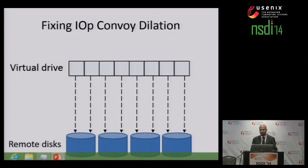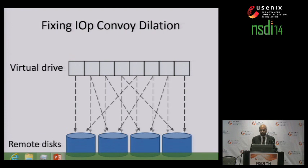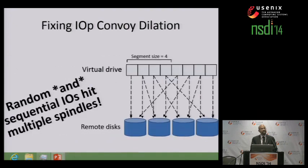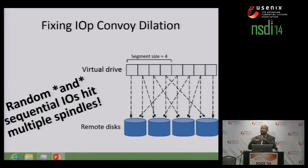There's a simple way to address this problem. We take the simple linear mapping and change it such that adjacent blocks are actually mapped to different backing remote disks. In this example, we have a segment size of four, meaning up to four sequential IOs will be handled by four different disks. Random and sequential IOs are now going to hit multiple spindles, mitigating the impact of IOP convoy dilation because even if sequential requests get spread out as they leave the client, those requests will still hit multiple drives in parallel.